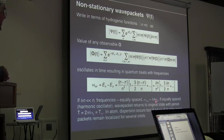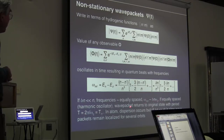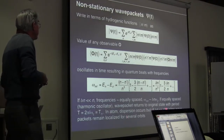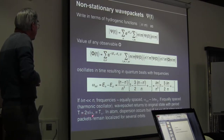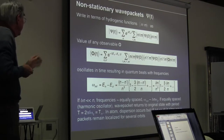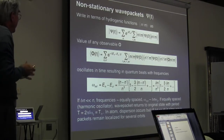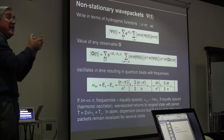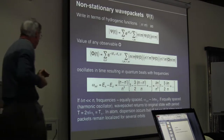The wave packet will return to its original state with a period given by 2π over omega. Now, an atom is not precisely a harmonic oscillator — there is some dispersion, but it is slow. So if you create a localized wave packet, it can stay localized for several periods.